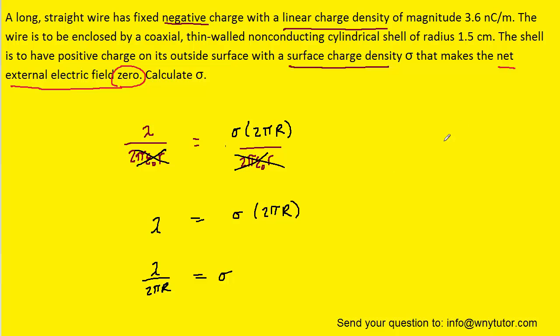And then we can plug in the known values. Notice that the radius has to be converted into meters by multiplying it by 10 to the minus 2. And then the nanocoulombs per meter has to be multiplied by 10 to the minus 9. Once we plug in the known values we can see that sigma turns out to be 3.8 times 10 to the negative eighth coulombs per meter squared.